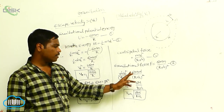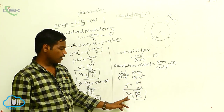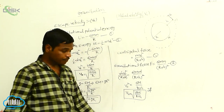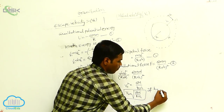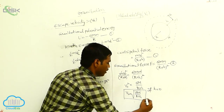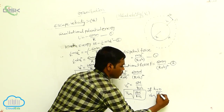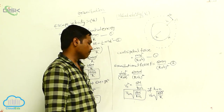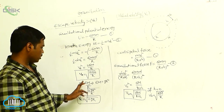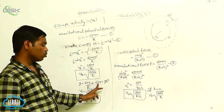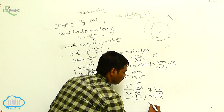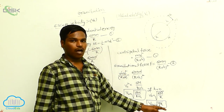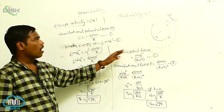For example, if h equals 0, then V naught equals the square root of GM by capital R. Since GM equals gR squared, we can also write V naught equals the square root of gR. This is the orbital velocity at the surface of the earth.